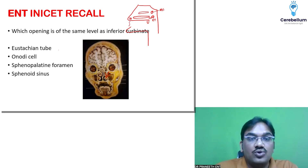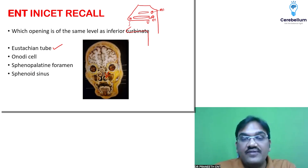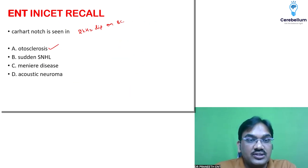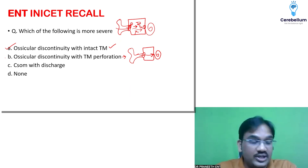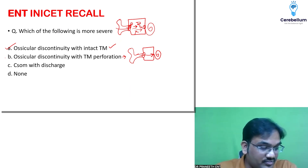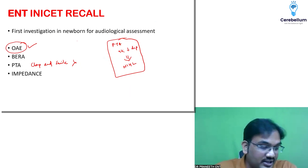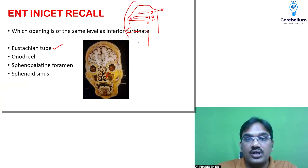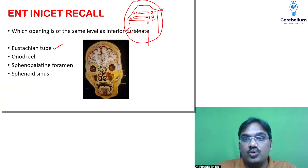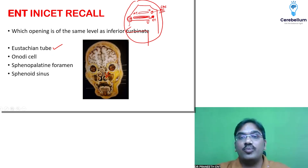At the same level as the inferior turbinate, you have the opening of the Eustachian tube. Any more ENT questions? All are very straightforward and easy. You can correlate this diagram — this is your inferior turbinate, this is your middle turbinate. Posterior to the middle turbinate you have the sphenopalatine foramen; posterior to the inferior turbinate you have the Eustachian tube opening.